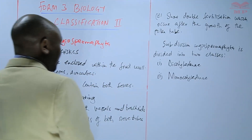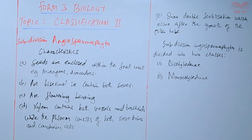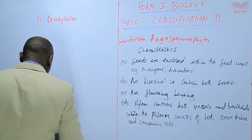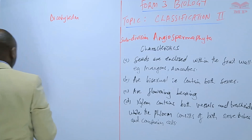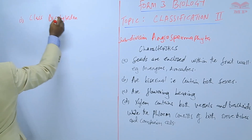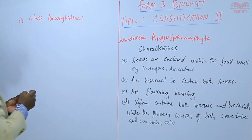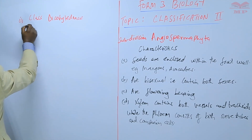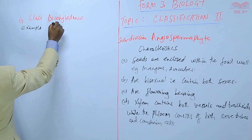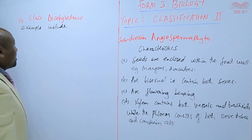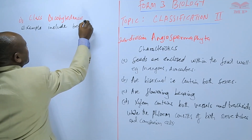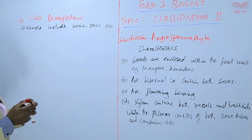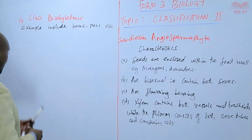So let us discuss the first class, and this is Dicotyledonae. Within this class, examples include the various legumes that we have, e.g. beans, peas, etc. So mainly the legumes are in the class Dicotyledonae.